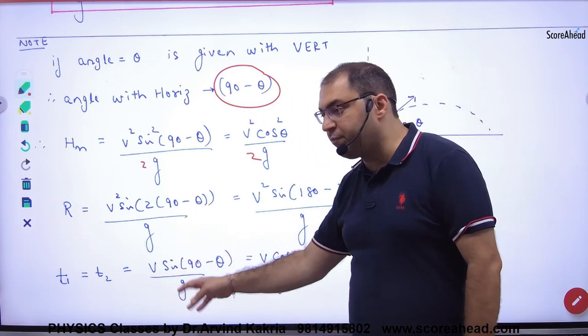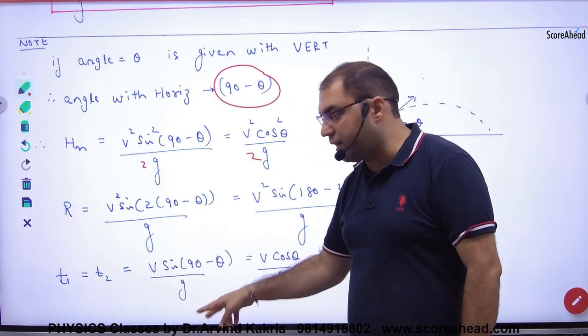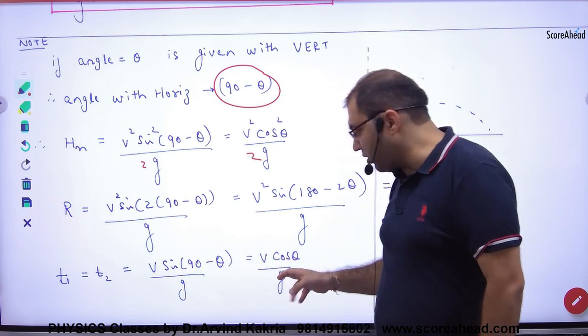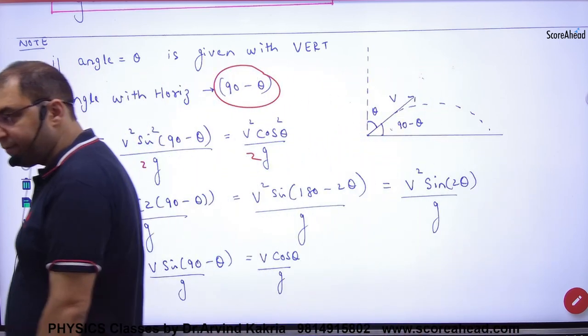In the time of ascent or descent, V sin theta by G. If theta is 90 minus theta, this will be cos. Is it clear? It is clear.